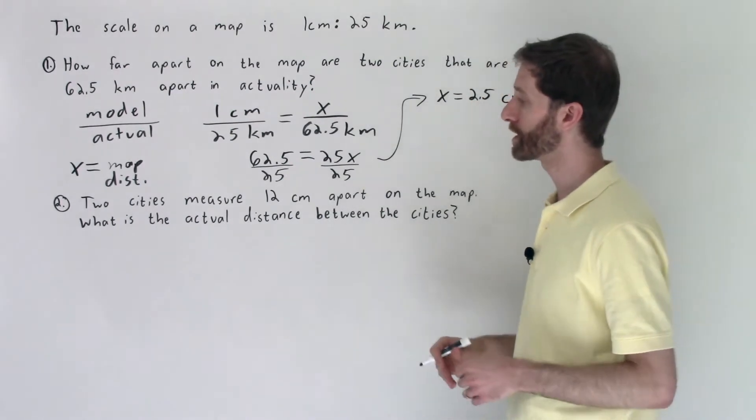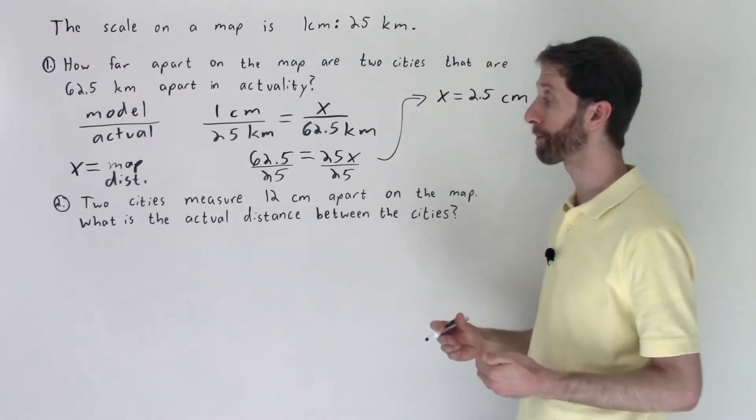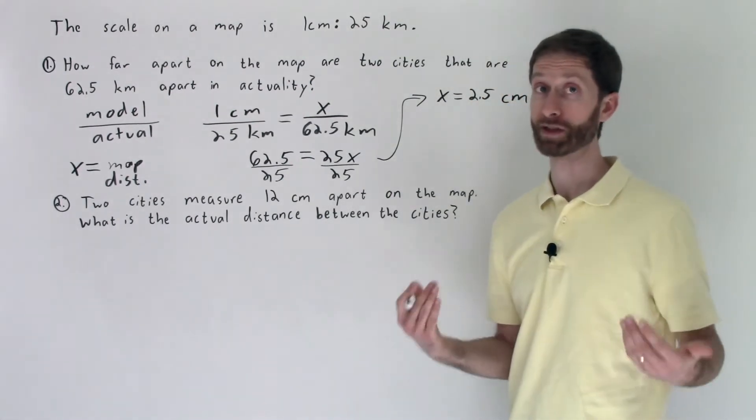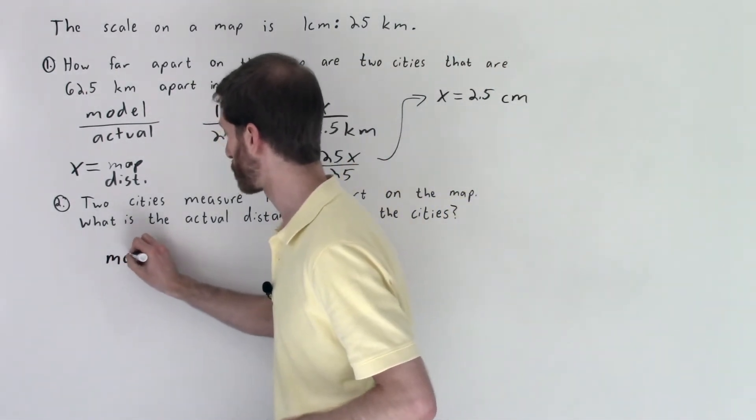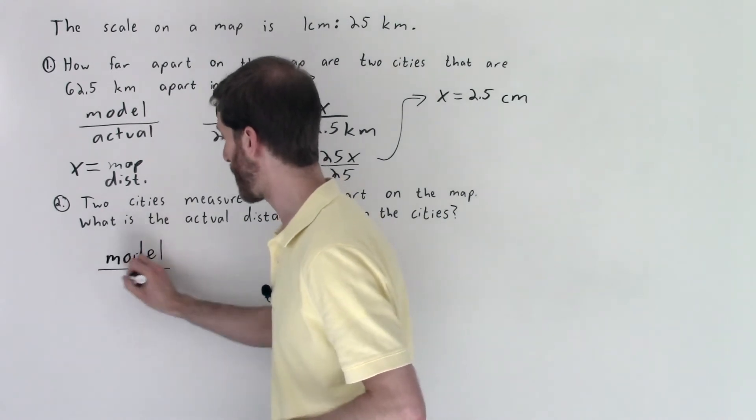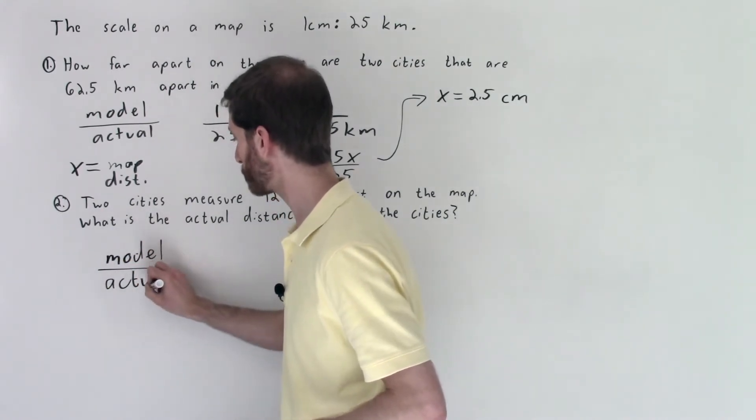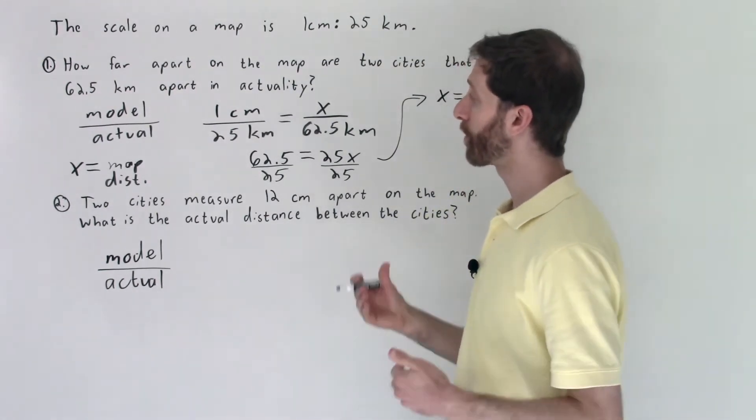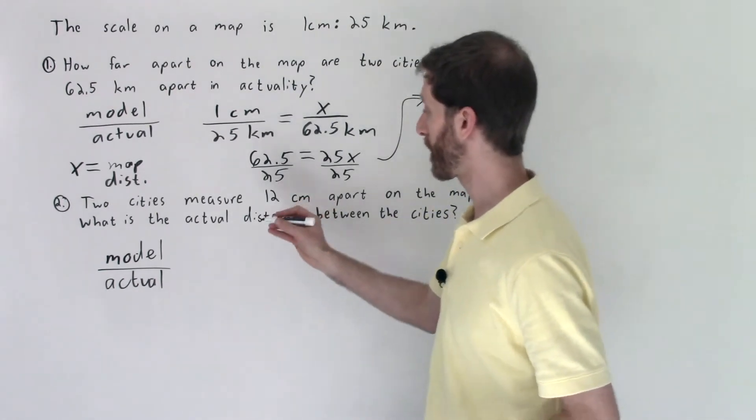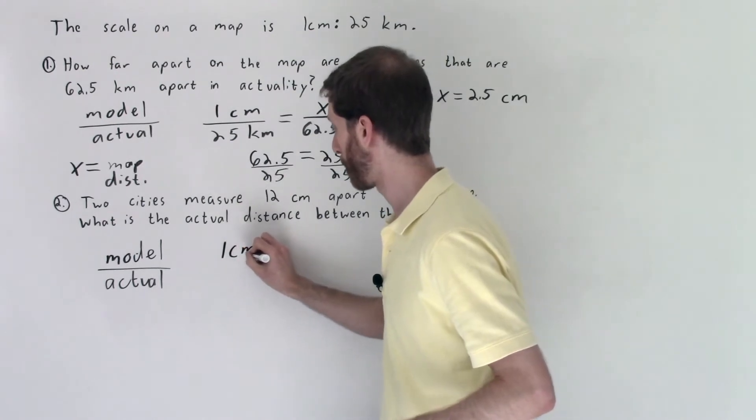It's all about setting up that proportion again with corresponding parts, model to actual, using the scale. This problem tells us two cities measure 12 centimeters apart on the map. What is the actual distance between the cities? So now we're flipping this around. We still have model to actual, so we're still comparing model to the actual amount. That's our governing idea when it comes to scales.